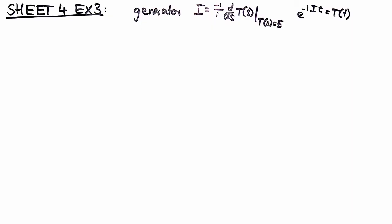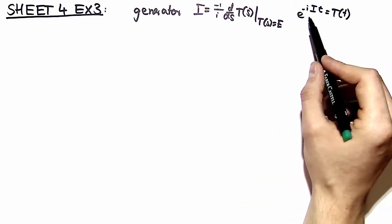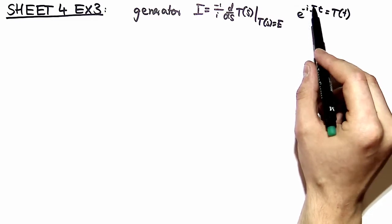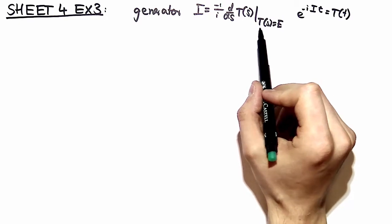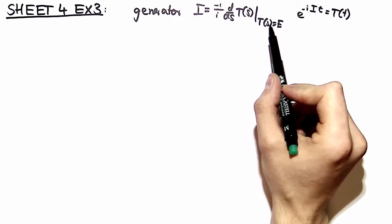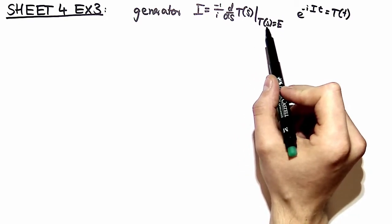Welcome back to exercise number 3 of problem set number 4. Here we're taking a closer look at generators. Generators make it possible to construct all elements of a representation via taking the exponential. i is the generator, defined on page 80 of the script, and we restrict it to all s which yield the identity element.